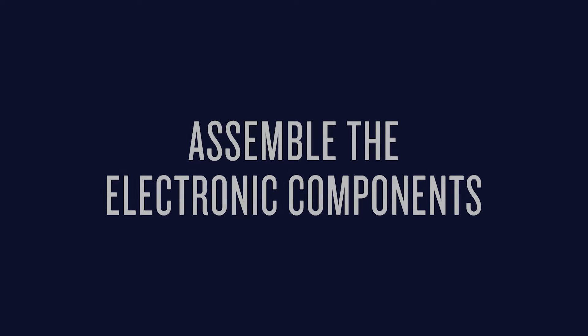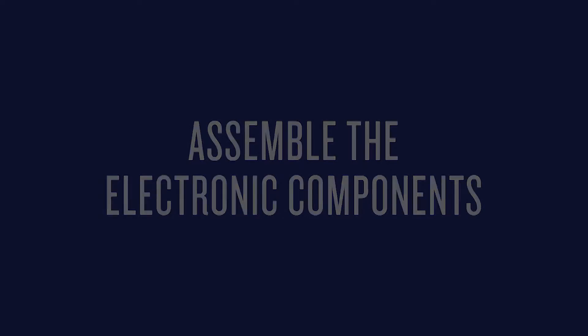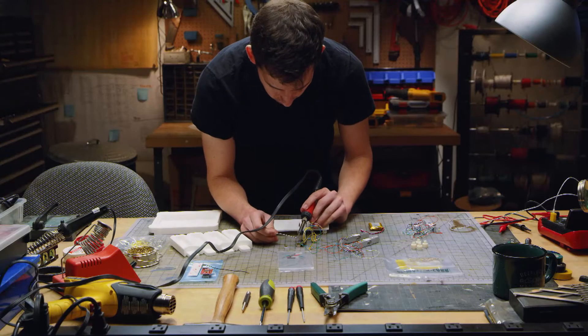The first thing we need to do is assemble the electronic components. First, solder the wires to the electron and install the SIM card.